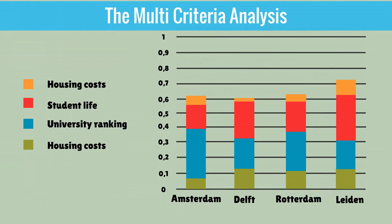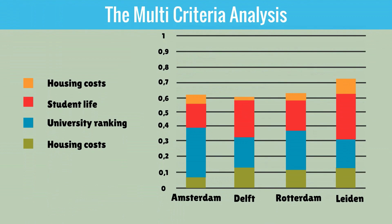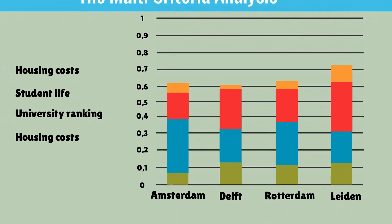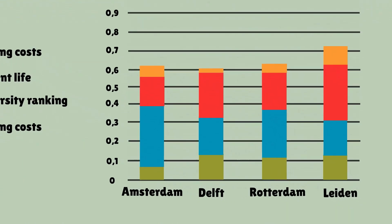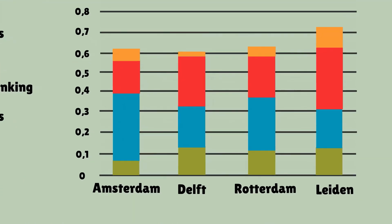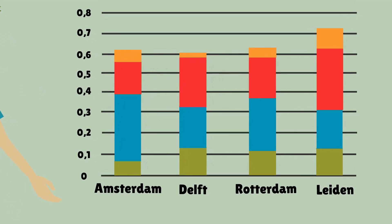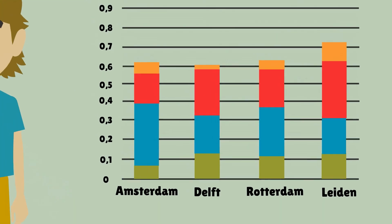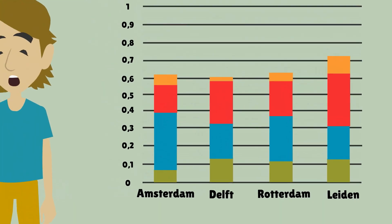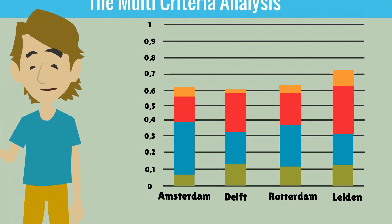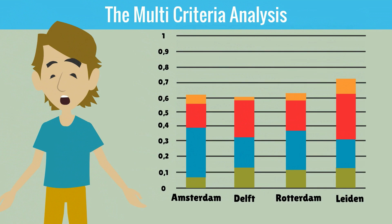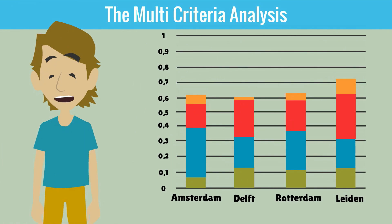Once the scores have been standardised and the weights have been ascribed, a ranking of alternatives can be established. In our example, when all the criteria and weights have been taken into account, Leiden would be your preferred choice. Thank you for watching and see you in the next tooling video.